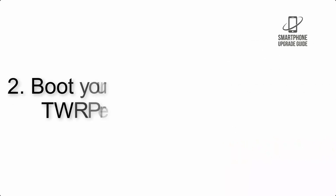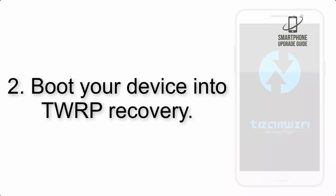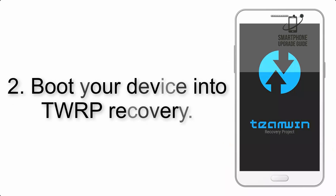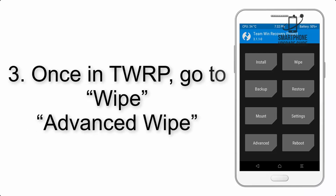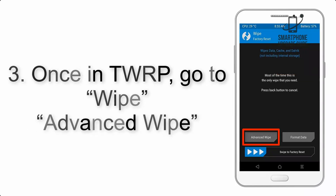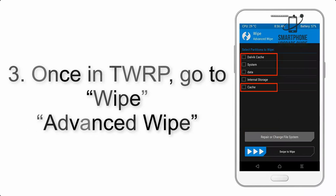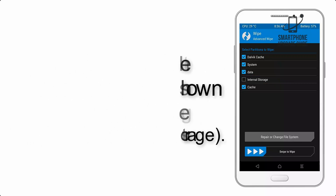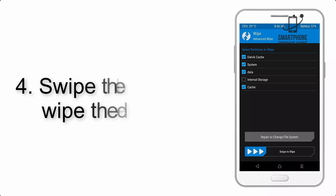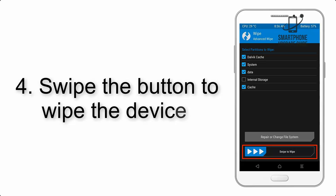Step 2: Boot your device into TWRP recovery. Once in TWRP, click on Advanced Wipe and select the checkboxes as shown in the image, excluding internal storage.